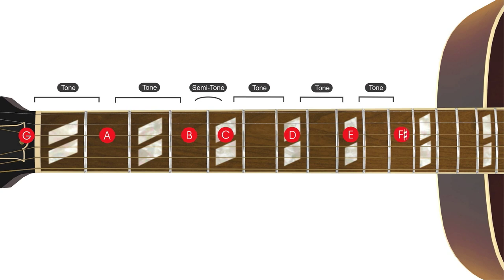and on the 11th fret we find F sharp, which nicely sets up the semitone resolution of the scale on the 12th fret G, one octave above the open G we started on.